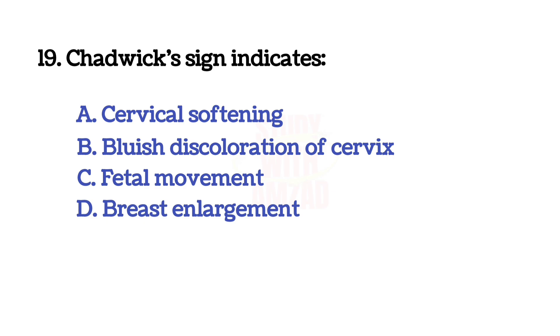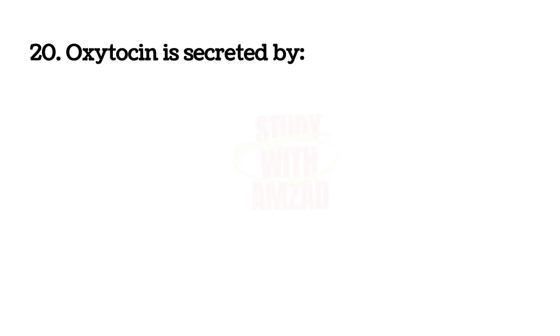What does Chadwick's sign indicate? The correct answer is B: Bluish discoloration of the cervix.